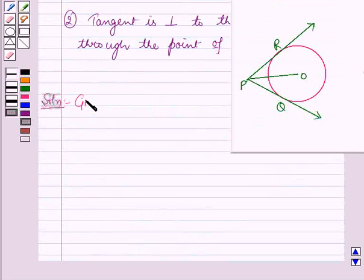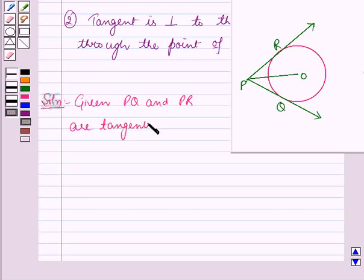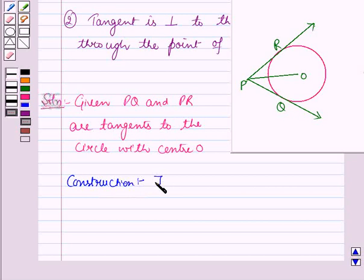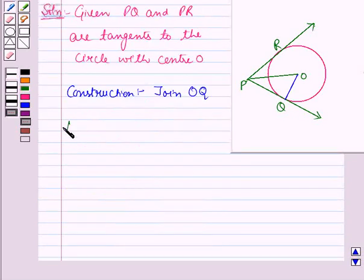Now given, PQ and PR are the tangents to the circle with center O. Now here we have a clear construction that is join OQ. OQ is the radius as O is the center of the circle.